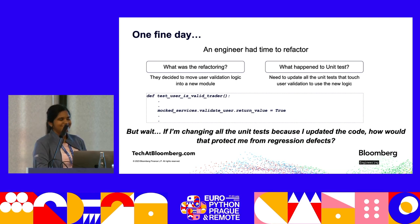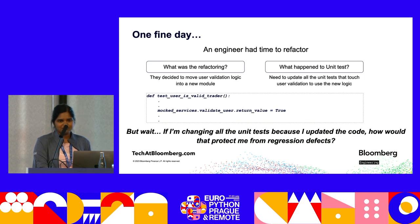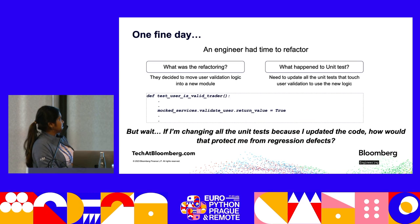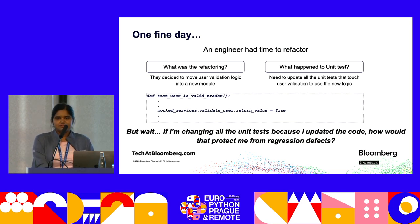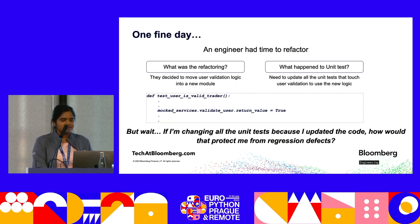One fine day, an engineer had time to refactor. They moved the user validation logic into a new module. Now what happens to the unit tests which are using the user validation logic? We have to go back and update by mocking. If I'm changing all the unit tests because I updated the code, how would that protect me from regression defects? This is something we ask in our teams before picking up any refactoring work — we see the impact of the refactoring on the unit tests and do a proper analysis.